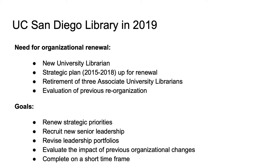Let me start today by setting up the context of our assessment and planning process. I joined UC San Diego in 2018 as a university librarian and, like many new leaders, focused on understanding our organization and our strategic priorities. Our library was at a unique point with many leadership retirements and opportunities to look back on an organizational change that had occurred about five years prior. These factors led us to a planning process that included parallel efforts to renew our strategic priorities, recruit new senior leadership, revise leadership portfolios, and evaluate the impact of previous organizational changes.